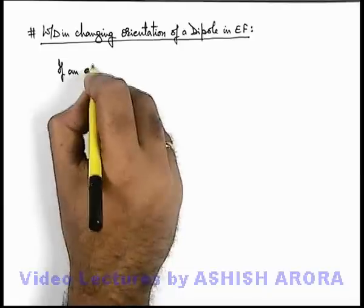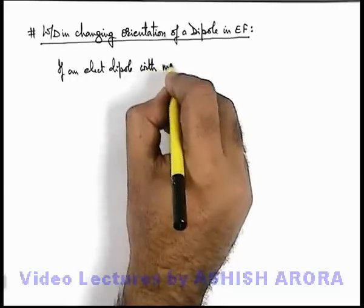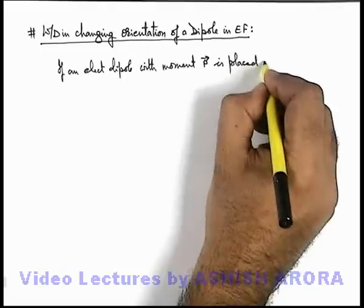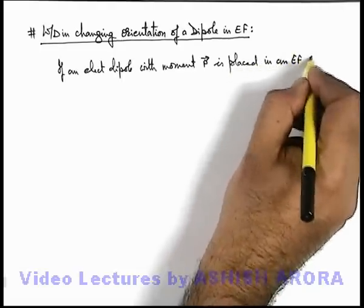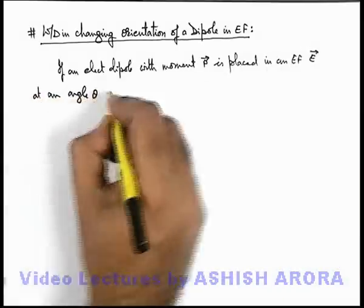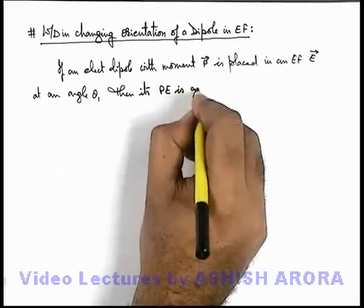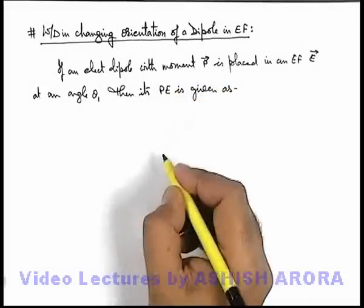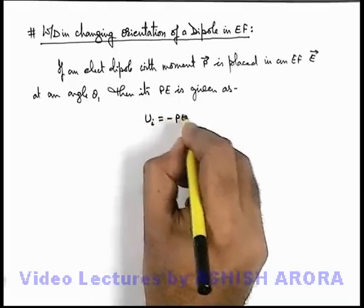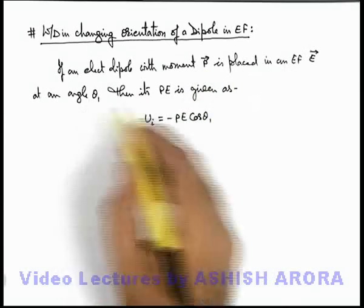If an electric dipole with its dipole moment p-vector is placed in an electric field with strength e-vector at an angle theta 1, then its potential energy is given as — we already discussed in the previous section the interaction potential energy. We can write the initial potential energy as minus p·E cos(theta 1), because the dipole p is placed in the electric field at an angle theta 1.